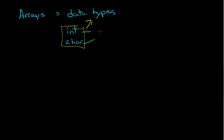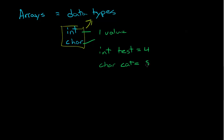The integer and character can hold one value. So if I had int test, then int test can only hold one value at a time. So if I say int test equals four, and char cat equals the dollar sign, that's what these values equal. Cat can't equal dollar sign and four — it has to be only one value. Same with the integer.